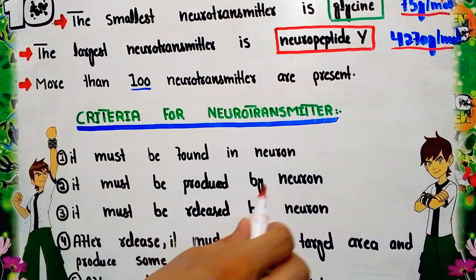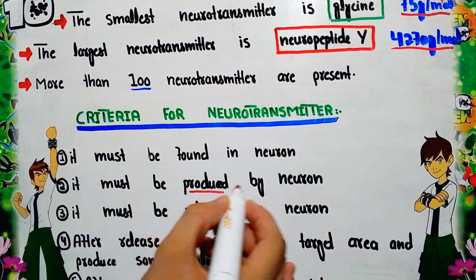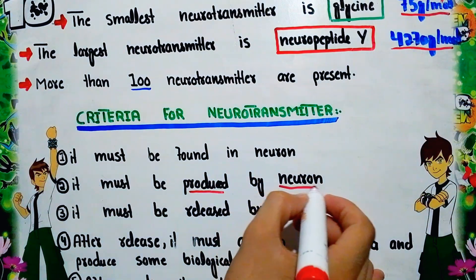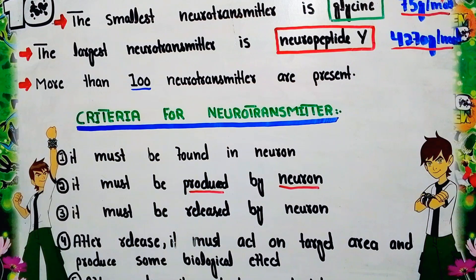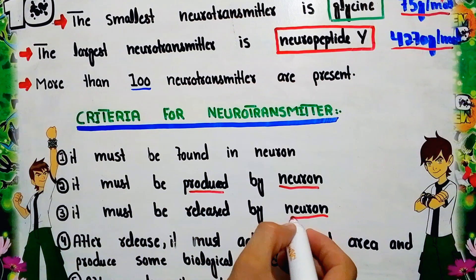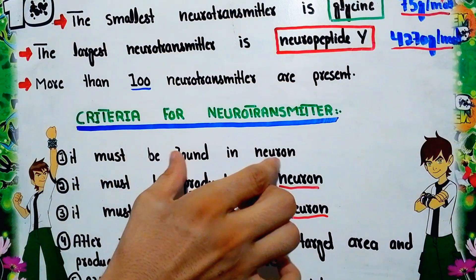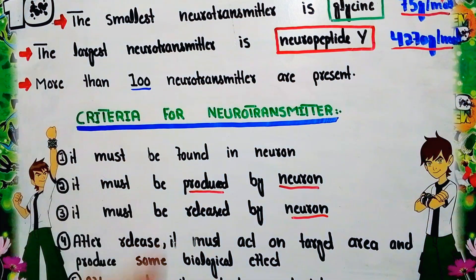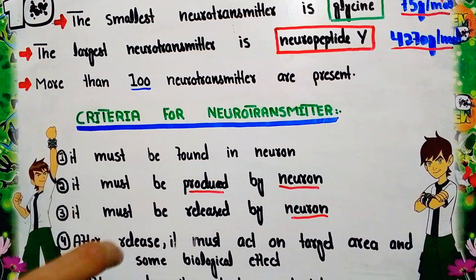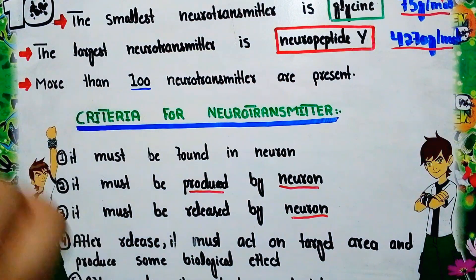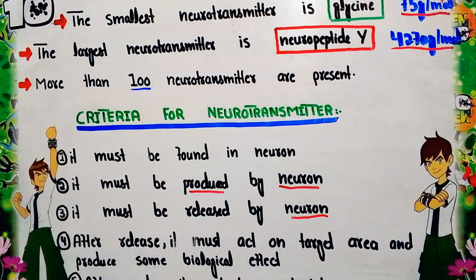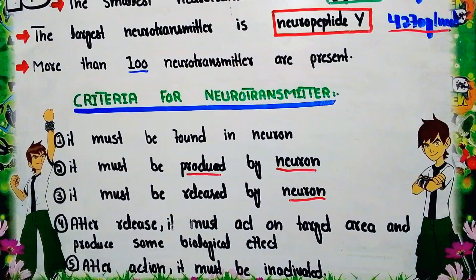The third criterion is that it must be released by neurons. The fourth criterion is that after release, it must act on the target area and produce some biological effect — the postsynaptic neuron must have a receptor, and the neurotransmitter acts on that receptor site to cause a biological effect on the postsynaptic membrane.